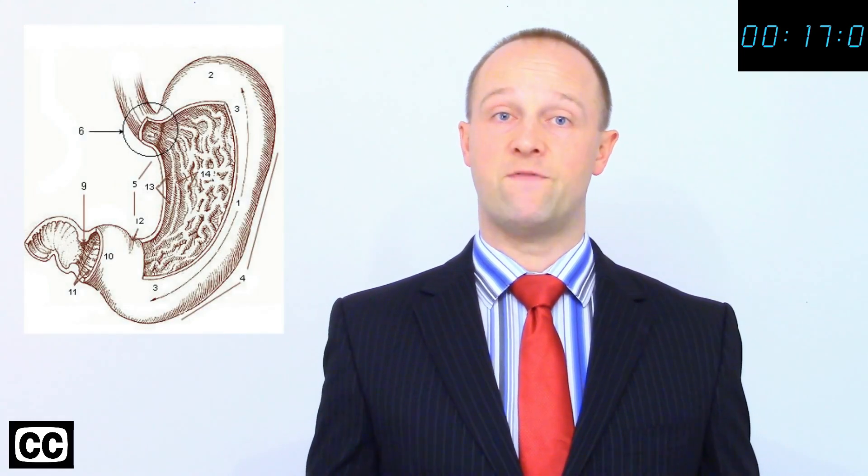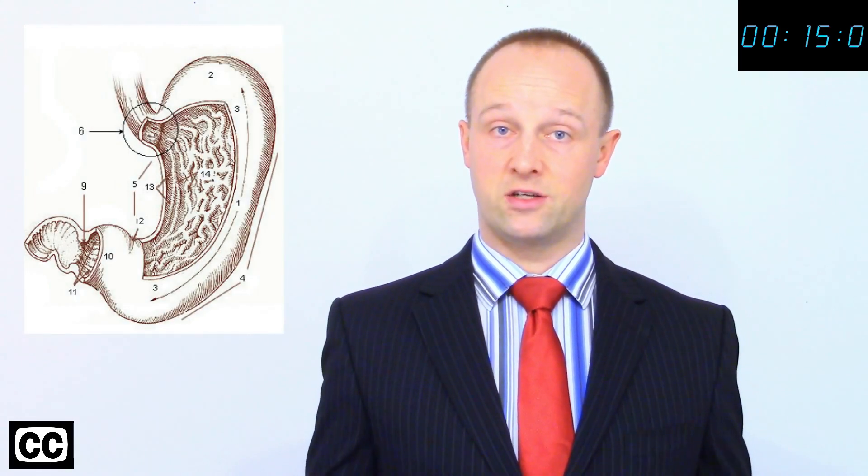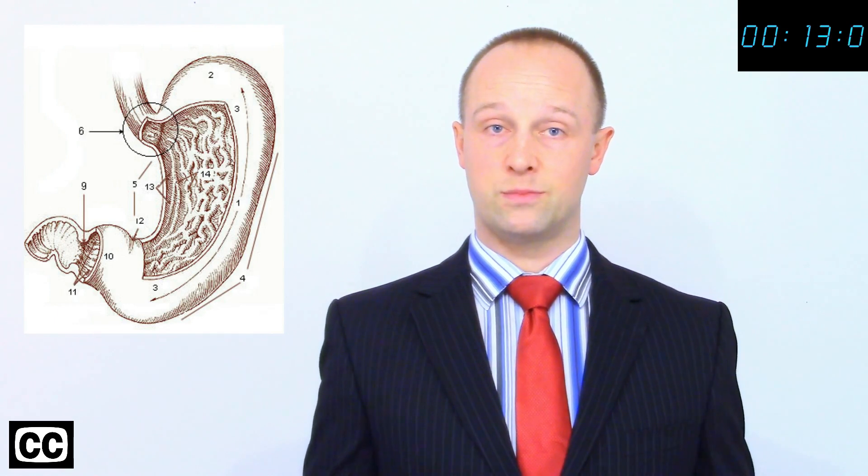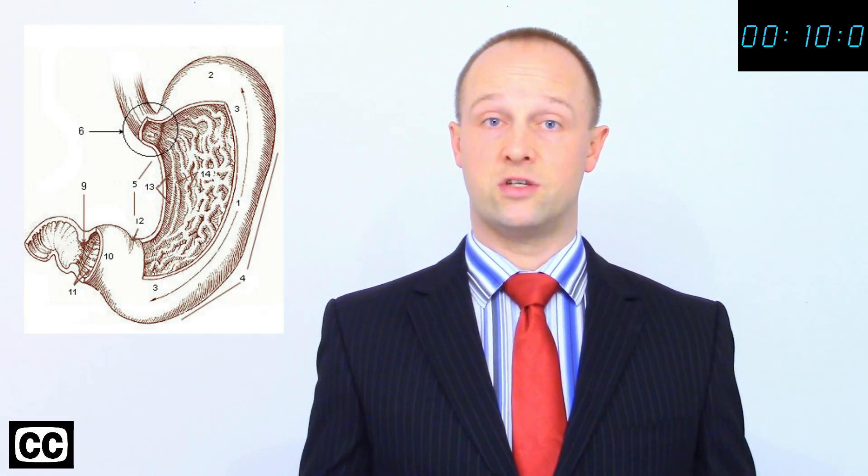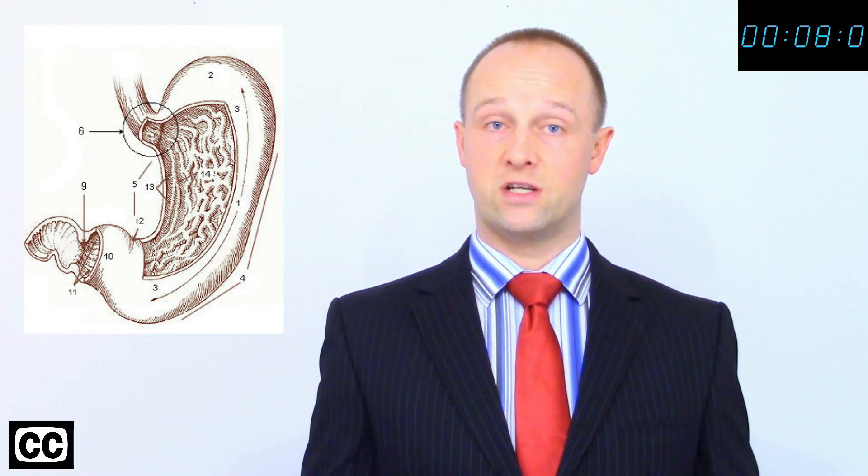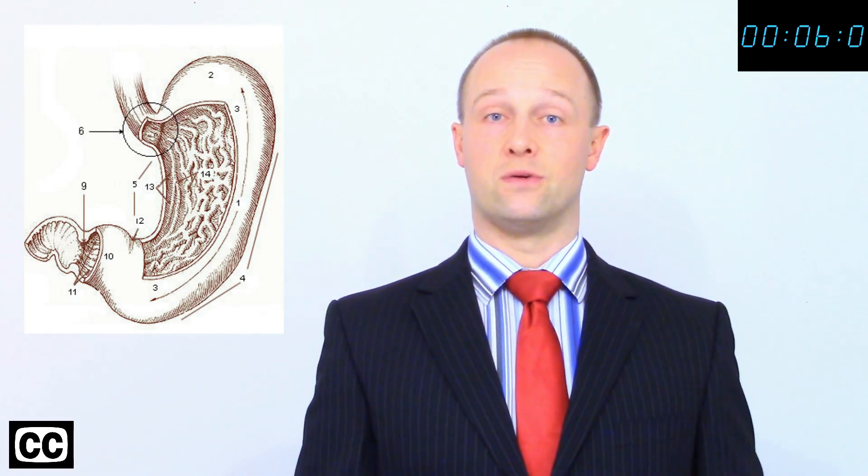The stomach is an organ made from various different tissues, such as glandular tissues, which produce digestive acid and enzymes, the muscle tissues around it, which allow it to contract and churn our food, and the epithelial tissues wrapped around that, which hold it all together.